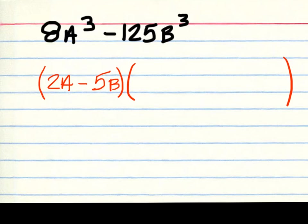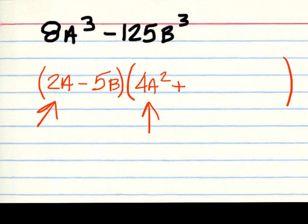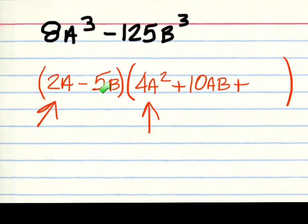Now move on to the second half. For the first part you need 2a squared, which gives 4a squared. Then add this and this multiplied together — that would be 10ab. And for the back end you need 5b squared, which gives 25b squared.